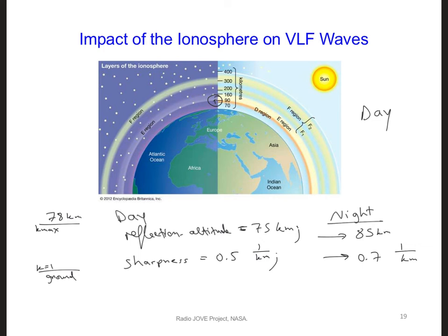Let's model up to about 88 kilometers. Try running your model for both day and nighttime conditions at 10 kHz, and set k-max so that your grid goes up to 88 kilometers when modeling night — you can keep it at that height for day as well, as it won't affect your daytime results. Plot the EZmax along the surface of the Earth versus i for both conditions on the same graph, so we can directly compare the results in one dimension across the ground.